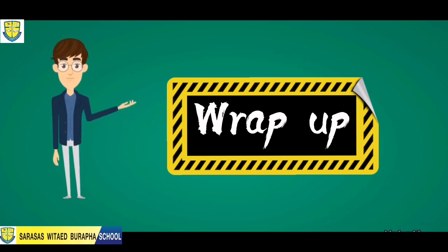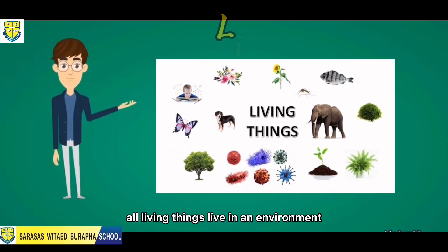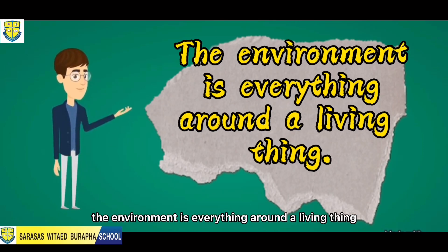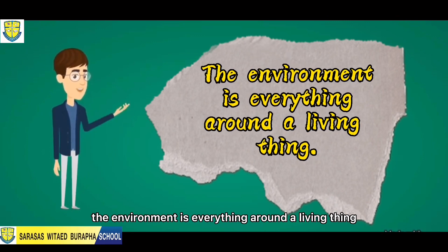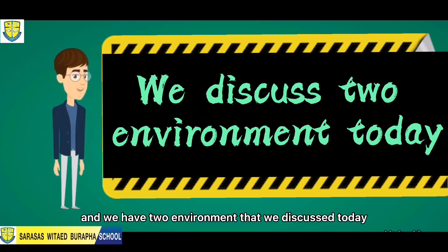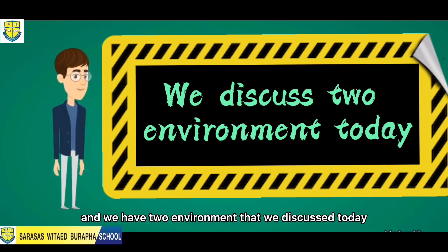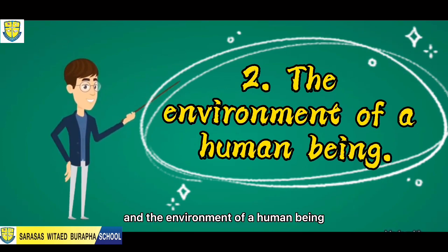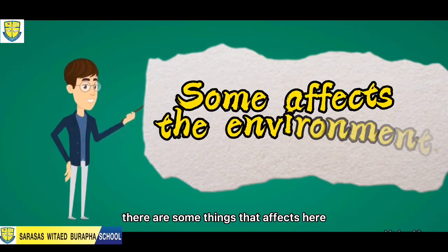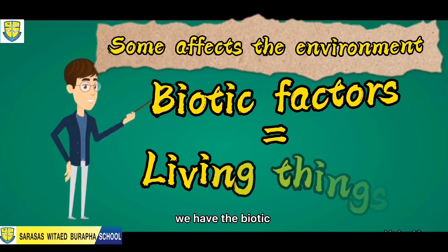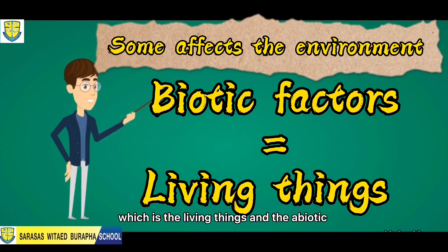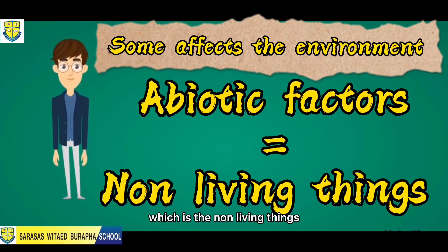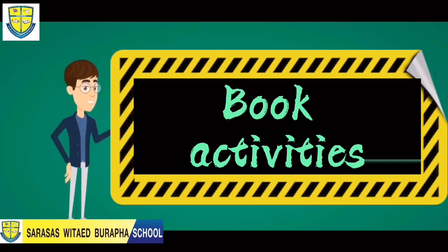Now let's wrap up what we discussed today. All living things live in an environment. The environment is everything around a living thing. We discussed two environments: the environment of a plant and the environment of a human being. Things that affect the environment include biotic factors, which are living things, and abiotic factors, which are non-living things.